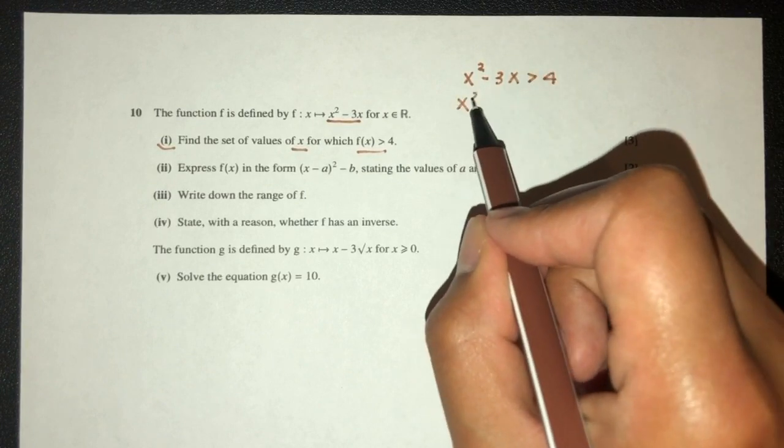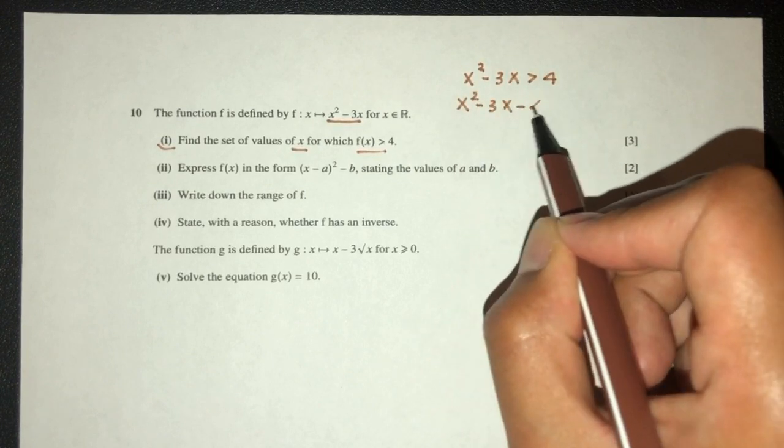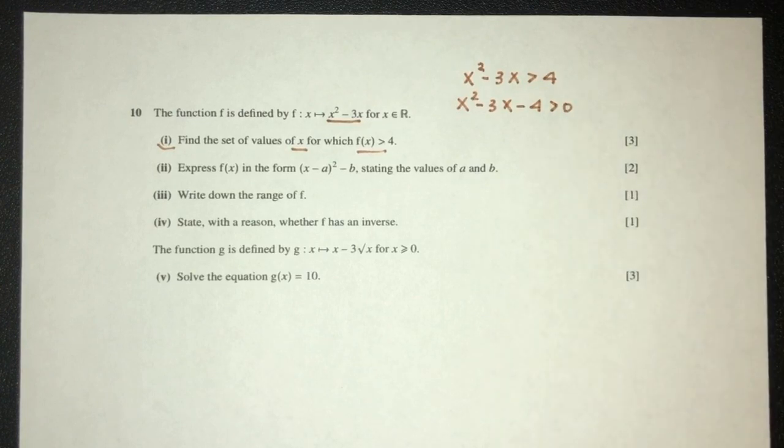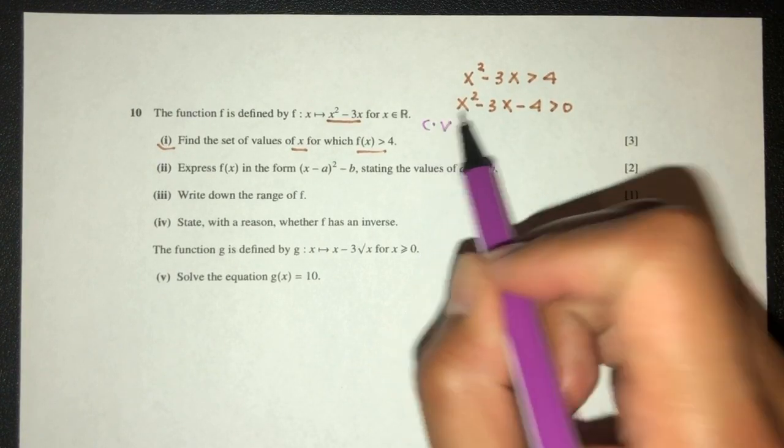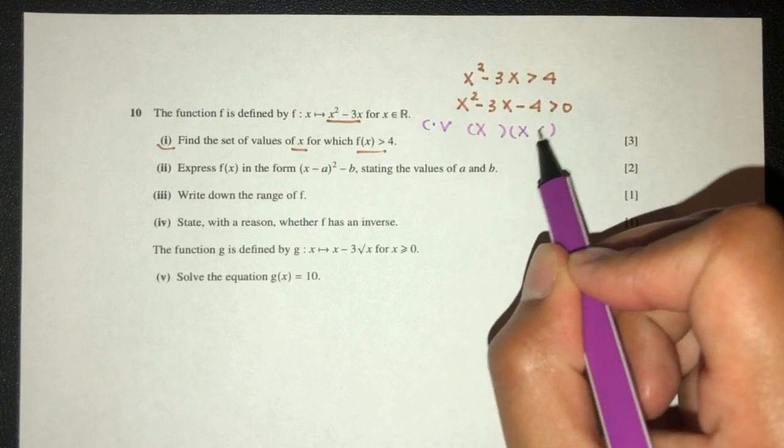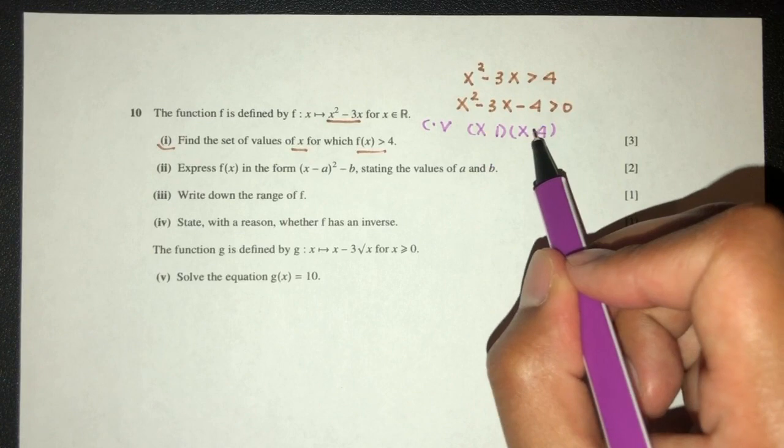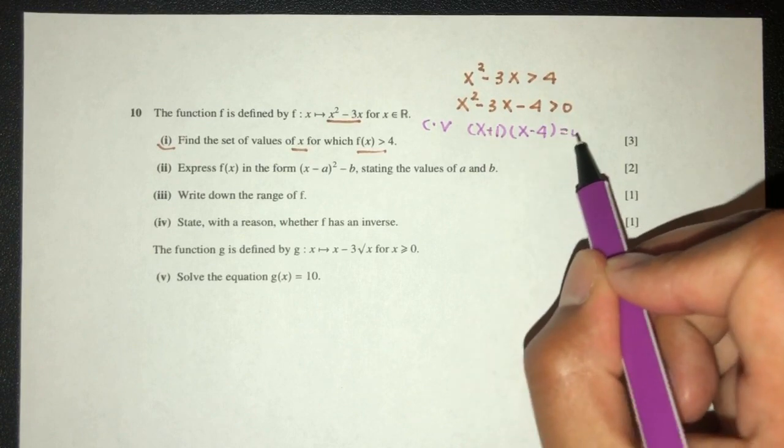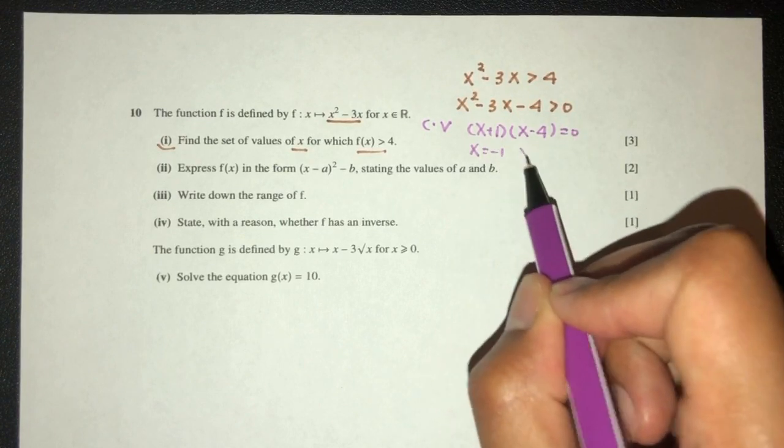Send this over here, you have x squared minus 3x minus 4 is more than 0. Again, we have seen this kind of question many times, we just have to first find the critical values. We factorize, that will be x times 4 times 1. To get minus 3, we have to have minus 4 plus 1. x will be minus 1, x will be 4.